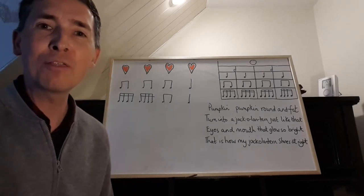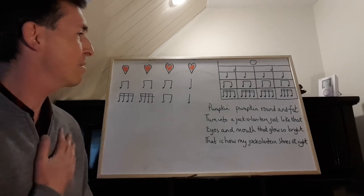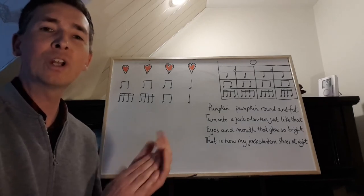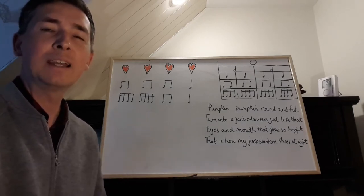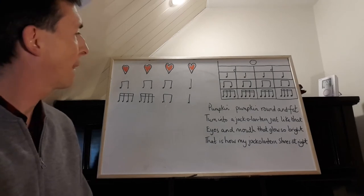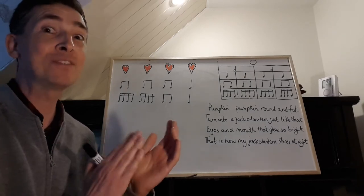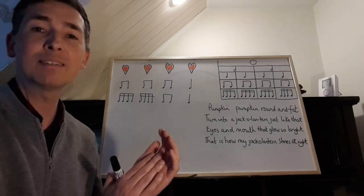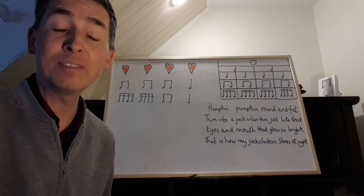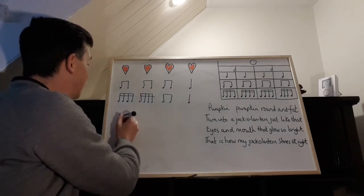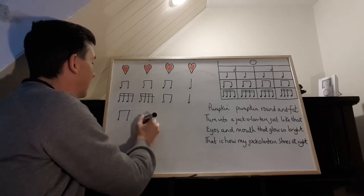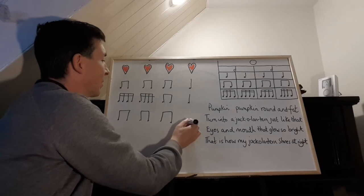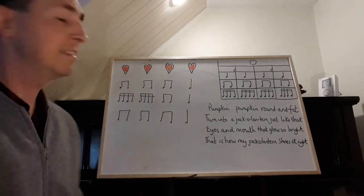Let's have a look at line three: eyes and mouth that glow so bright. Do you notice anything about line three? Pumpkin, pumpkin, round and fat — eyes and mouth that glow so bright. It's actually the same rhythm as line one, isn't it? So we should have three ti-ti's followed by one ta. That seems to work okay.